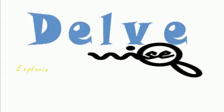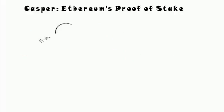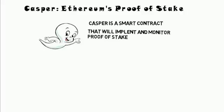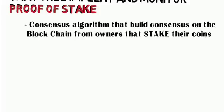Today we'll be talking about Ethereum's Proof-of-Stake and its implementation of Casper. Casper will be a smart contract on the Ethereum network that will implement and monitor Proof-of-Stake, which is a form of consensus algorithm that builds consensus on the blockchain from owners that stake their coins.